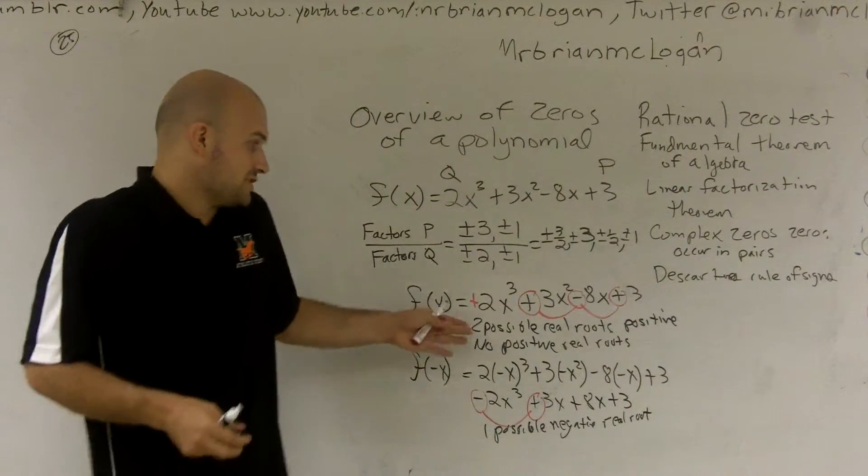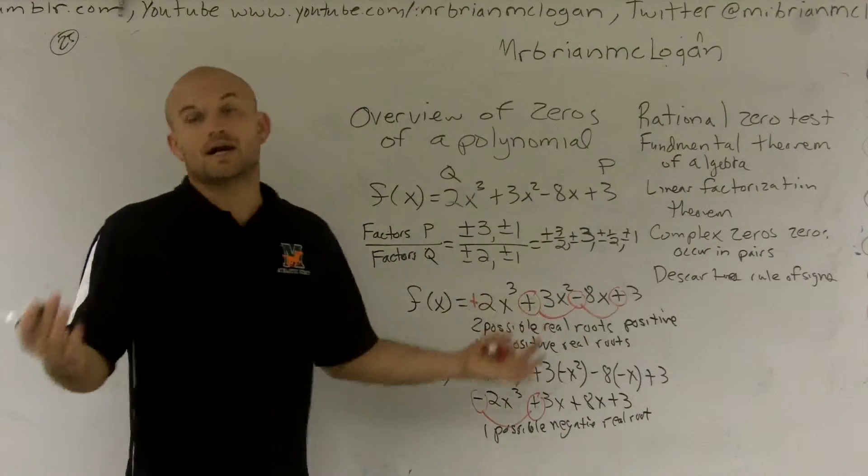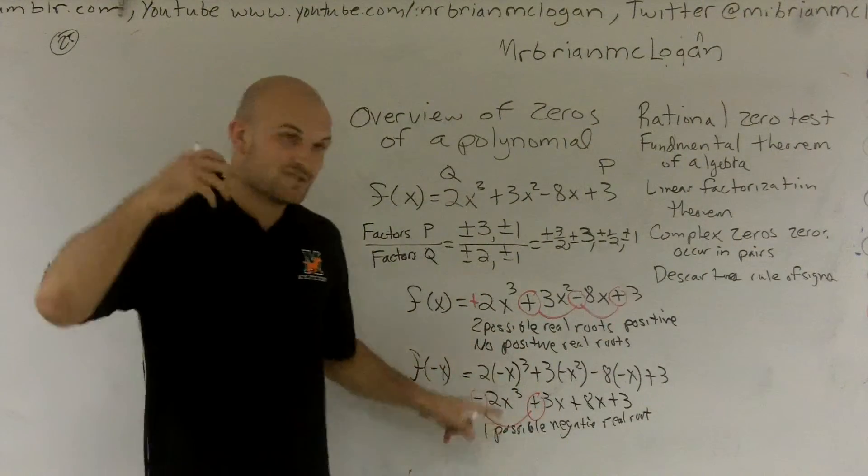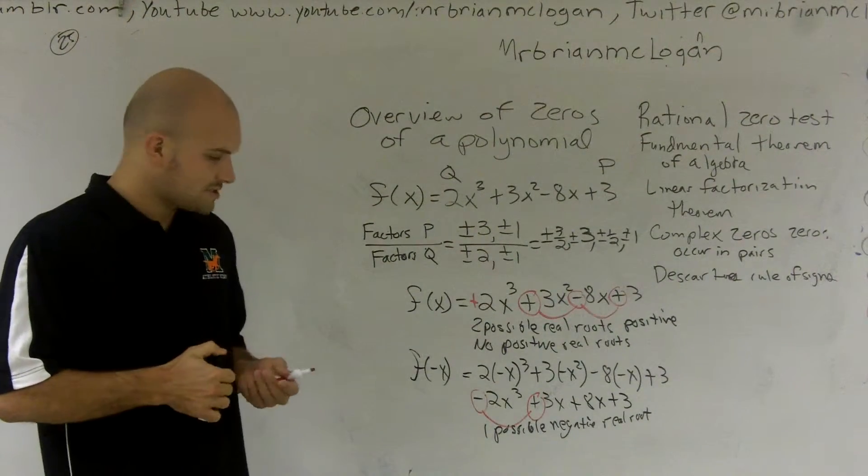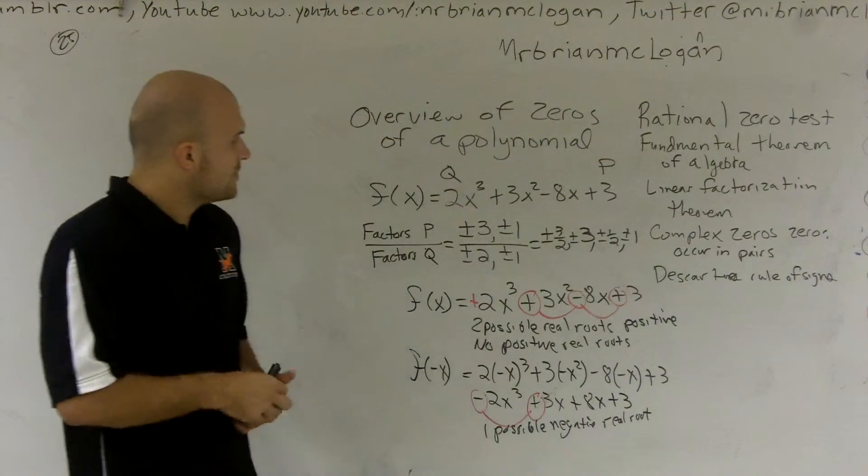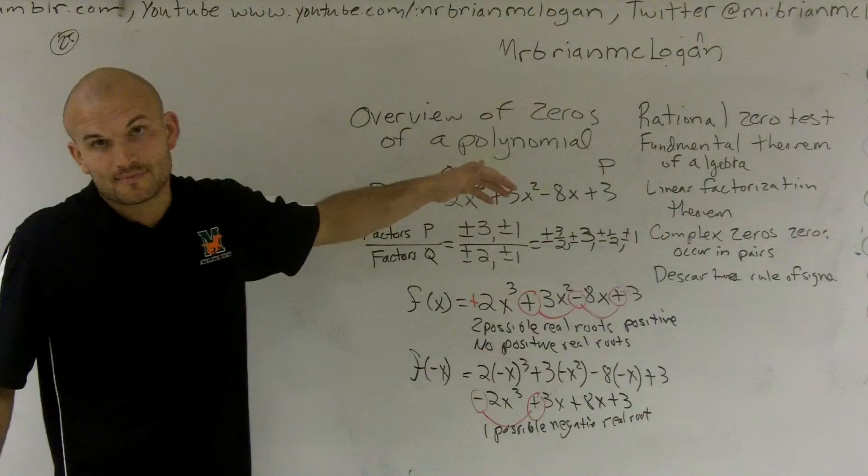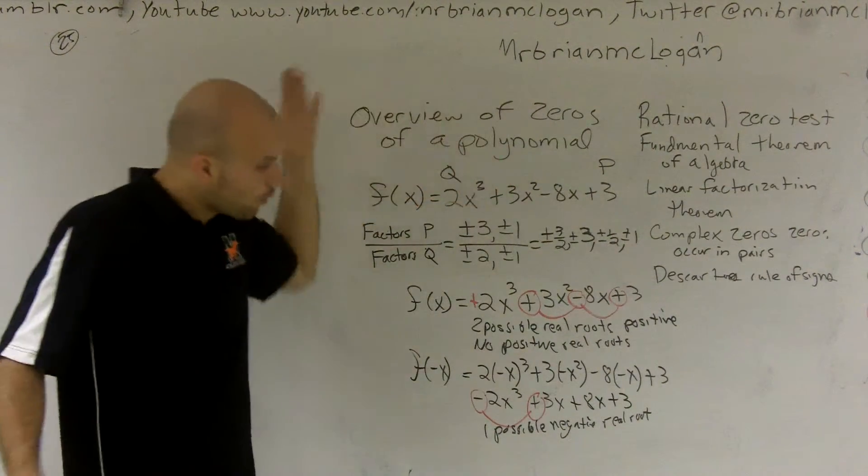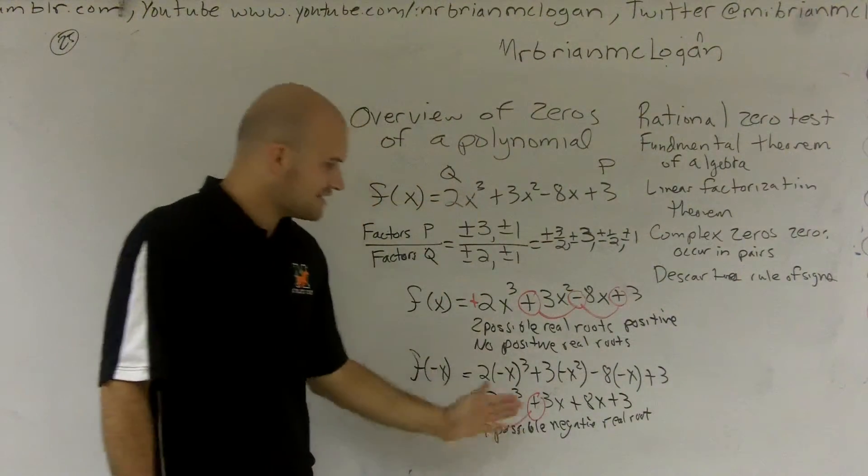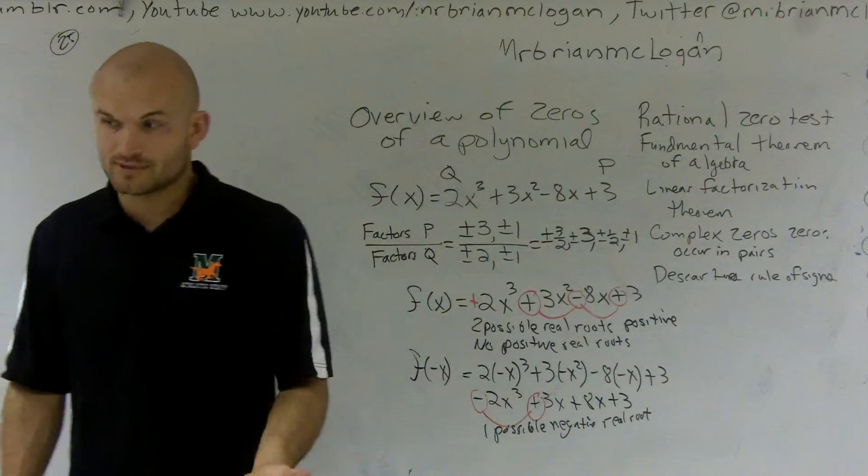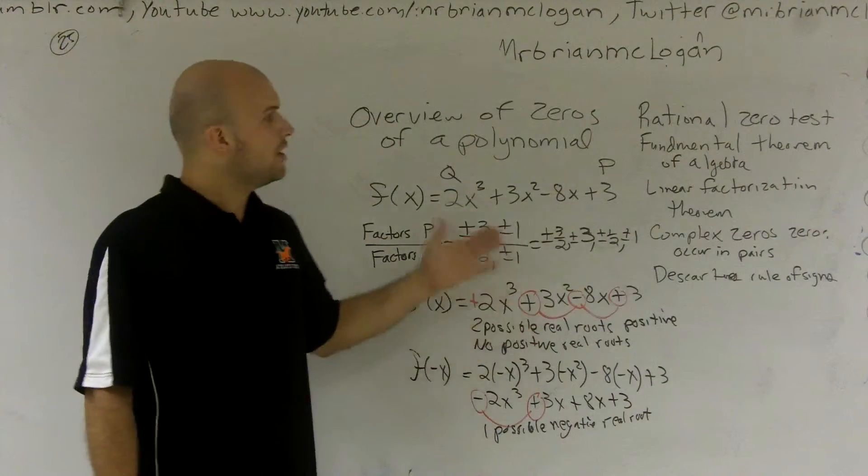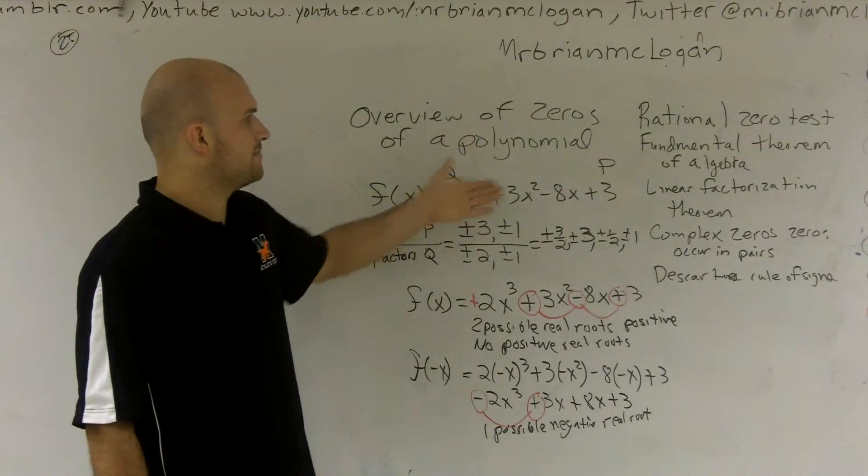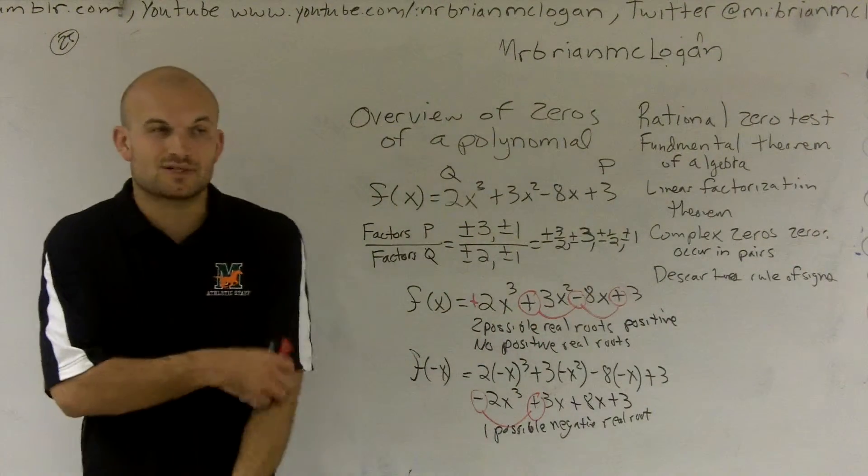So there's only one possible negative real root. What that's saying is there's either 2 possible real roots or none. But we know there's at least one of my roots that's going to be negative and real. So that's just very helpful because when I look at it, I have 3 roots, I have 3 possible factors.